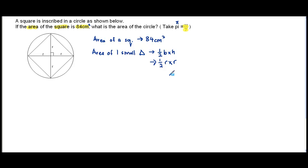Now, area of the square is 84 cm². So if the square is divided into four, we can actually find the area of one triangle.